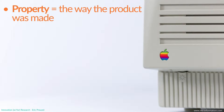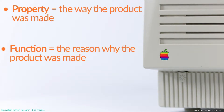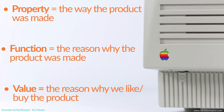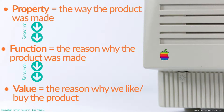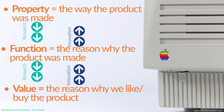In other words, we can define the property as the way the product was made — how we combine different features, properties, and structures to build the system or material. The function is the reason why the product was made, and the value is the reason why we buy the product. This logical path from property to function to value is what we usually follow when we do research.